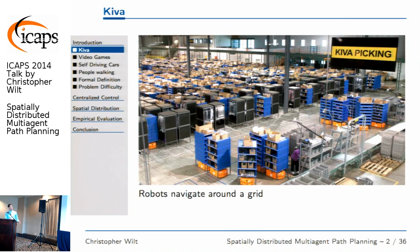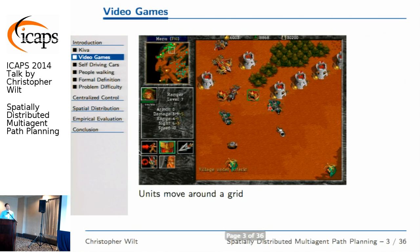The simplest and probably most fun example is Kiva, where robots have to navigate around a grid and make sure they don't crash into each other. We have a bunch of entities moving around a graph with the objective of reaching their final destination without conflicting with one another. Another example occurs in video games, where units want to move around a graph but are not allowed to occupy the same space at the same time, so they have to find paths collectively to get to where they're going without ever being in the same place at the same time.